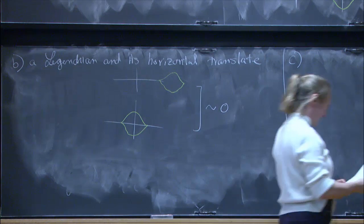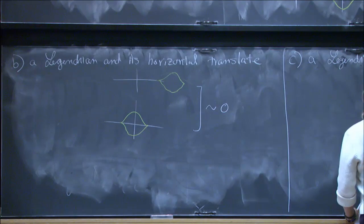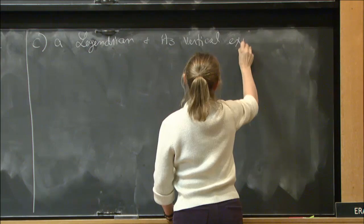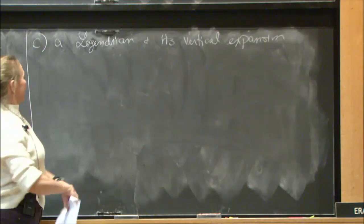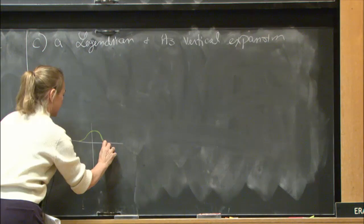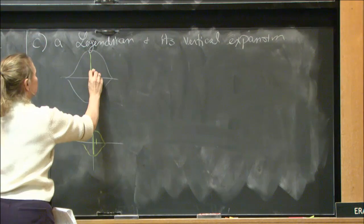The last example I want to emphasize is vertical expansion. In my notation, I always say the one on the bottom first. So take a Legendrian of height 1 at the bottom and put a bigger one — say height 2 — at the top. As long as it's bigger than or equal to 1, this is going to be approximately zero, meaning you can get it arbitrarily close.